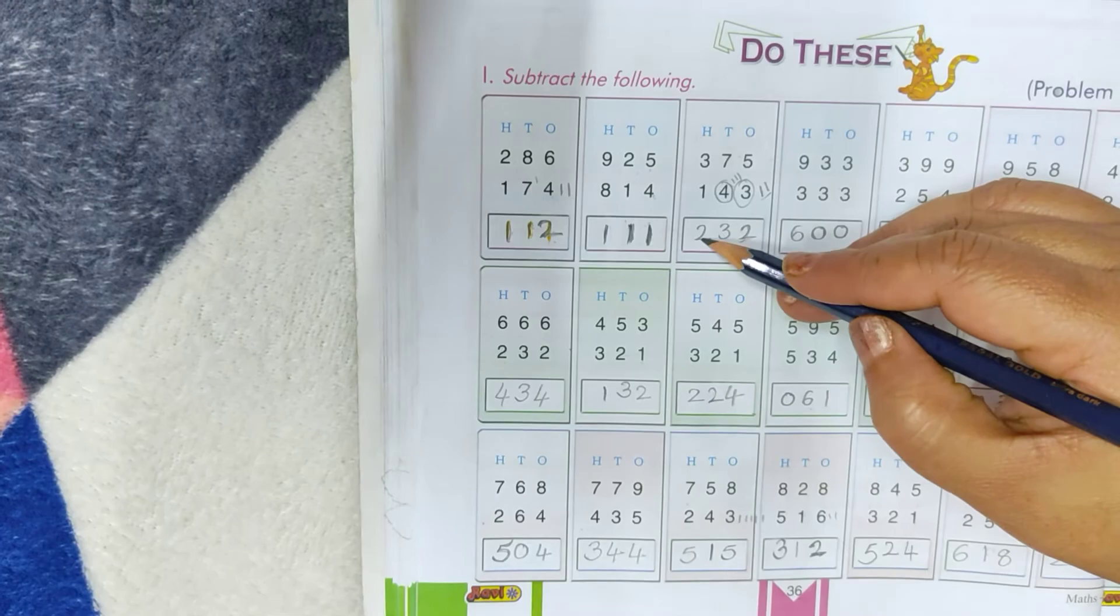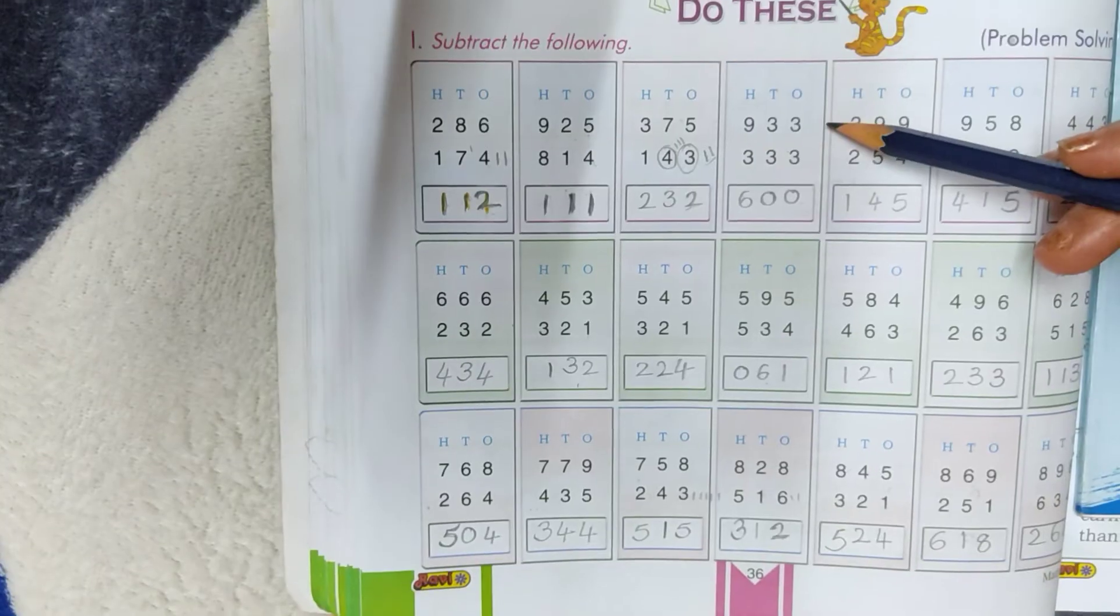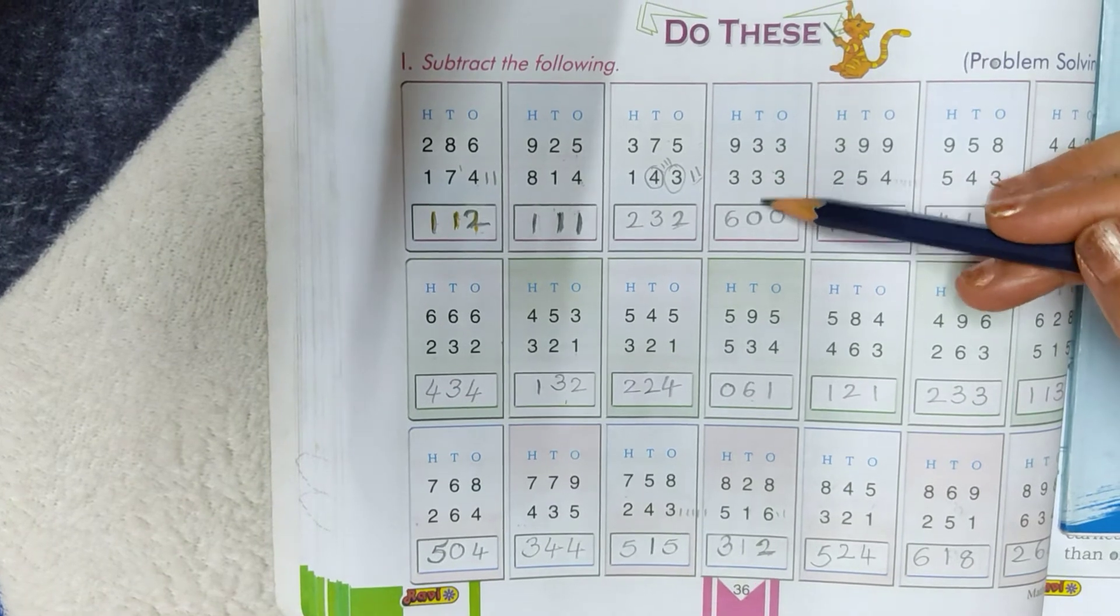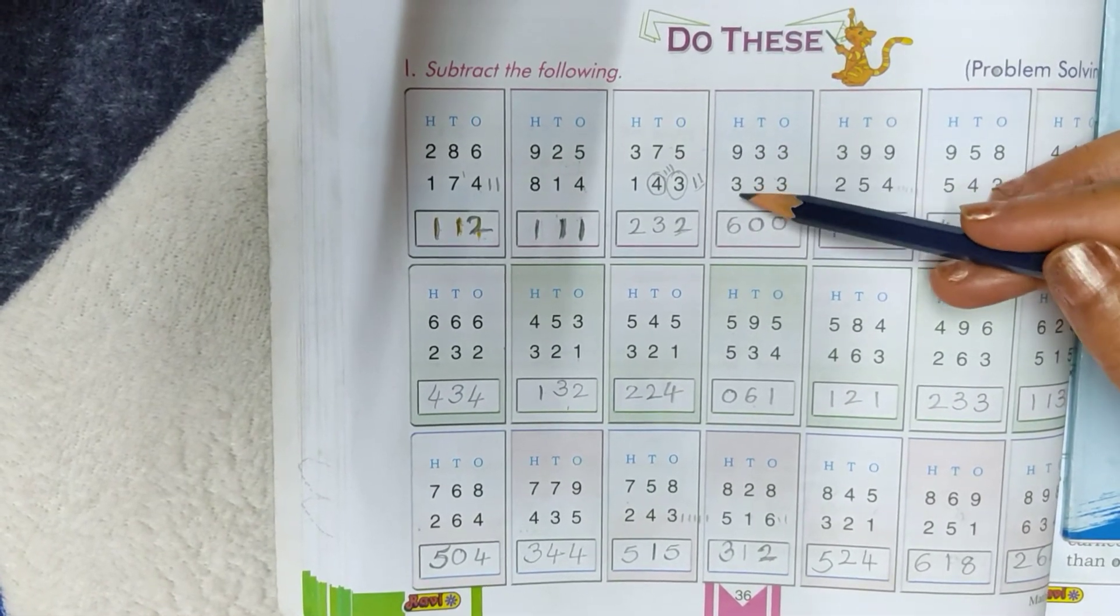See 3 minus 1, 2. 3 minus 3, 0. 3 minus 3, 0. 3 minus 3, 0. 9 minus 3, 6.